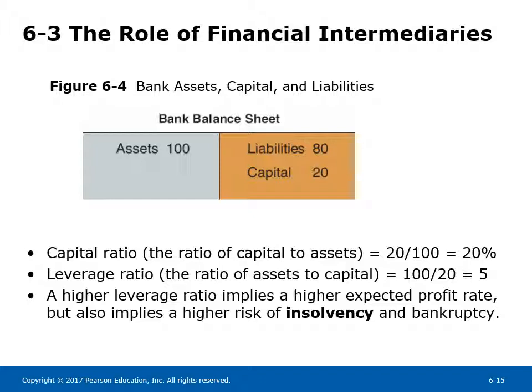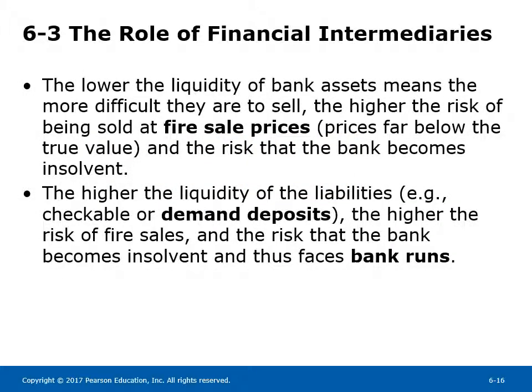The capital ratio — the ratio of capital to assets — equals 20 over 100, or 20%. A higher leverage ratio implies a higher expected profit rate but also a higher risk of insolvency and bankruptcy. Lower liquidity of bank assets means they are more difficult to sell, raising the risk of fire sales at prices far below true value and the risk of insolvency. Higher liquidity of liabilities — such as checkable or demand deposits — raises the risk of fire sales and bank runs.